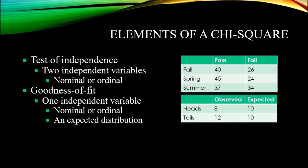The ordinal level of measurement has all the characteristics of the nominal level, except the observations can be ranked. However, the distance between the observations still does not have meaning like you would see at the interval or ratio level of measurement, where the distance has meaning. At the ordinal level, you could consider first, second, and third in a race — you know who finished first, second, and third, but you don't know how much distance there was between them. They're ranked, but the distance is not meaningful.